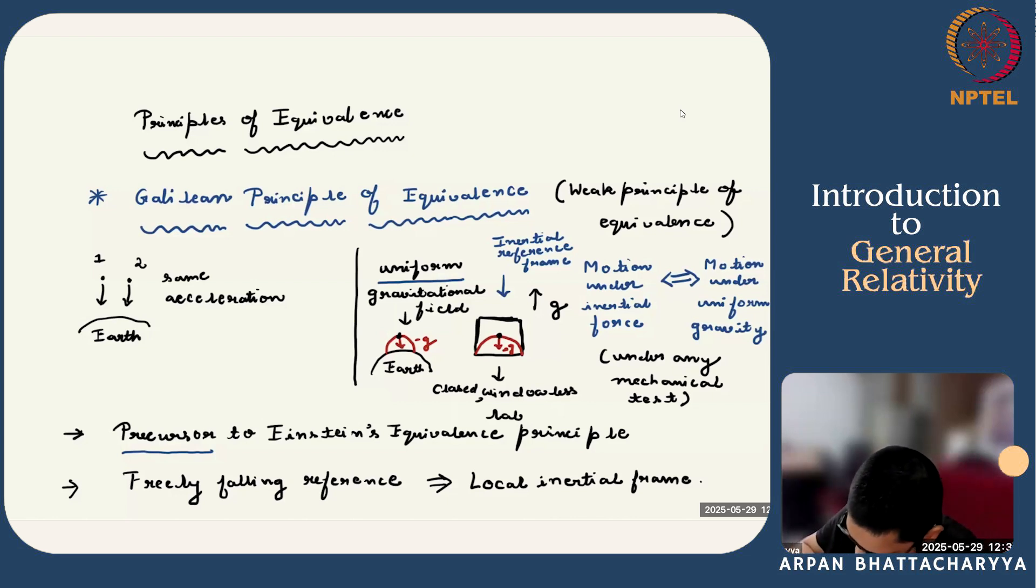From that, he concludes that suppose we are doing an experiment in a windowless closed lab and you don't have any access to the outside. First, this lab is based on the Earth, and you assume that the Earth's gravitational field is uniformly acting on the entire dimension of this lab and entire duration of the experiment. And you are performing some mechanical experiment. Suppose you're throwing a projectile. It will experience a downward acceleration minus g due to the Earth's gravitational pull.